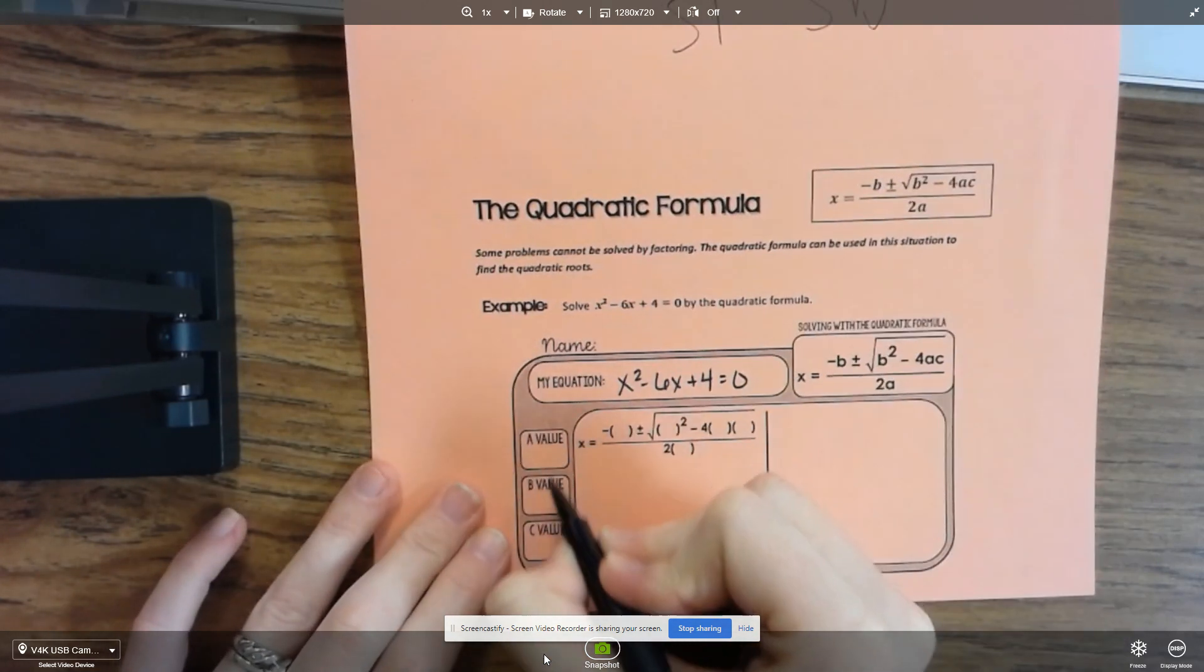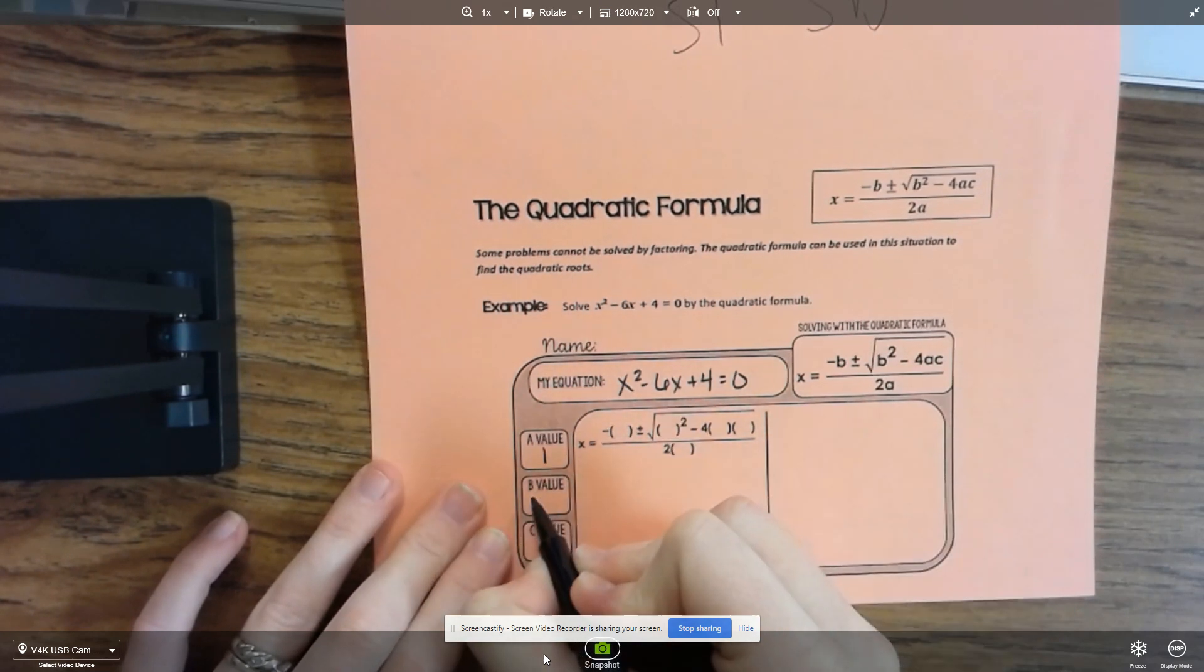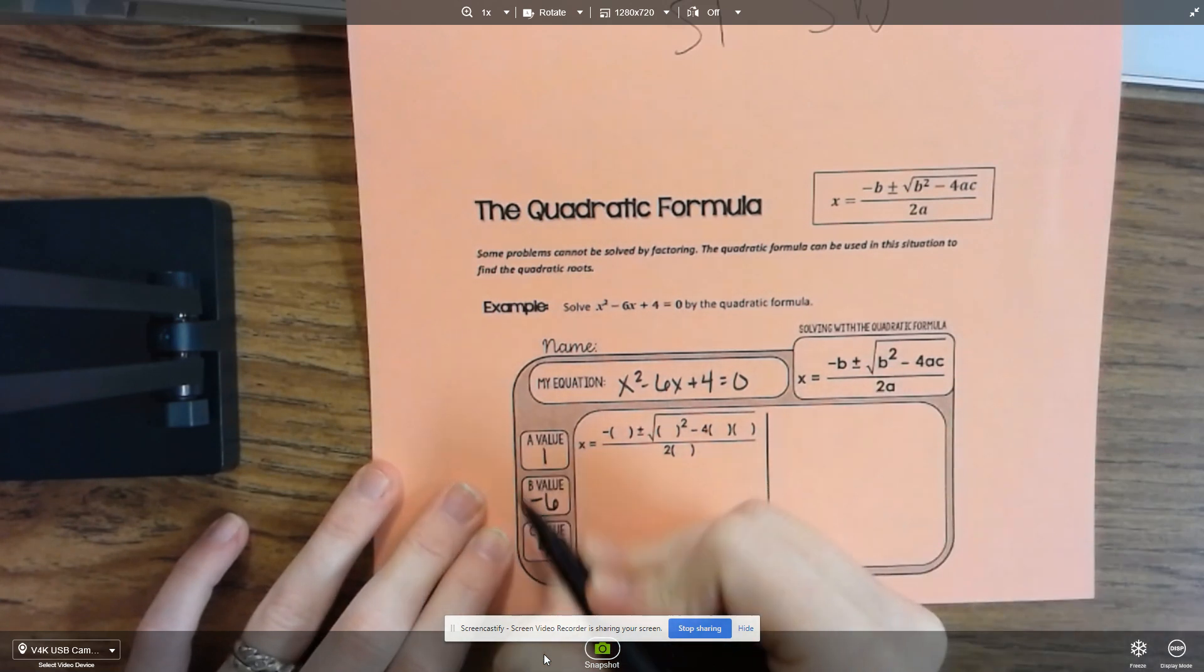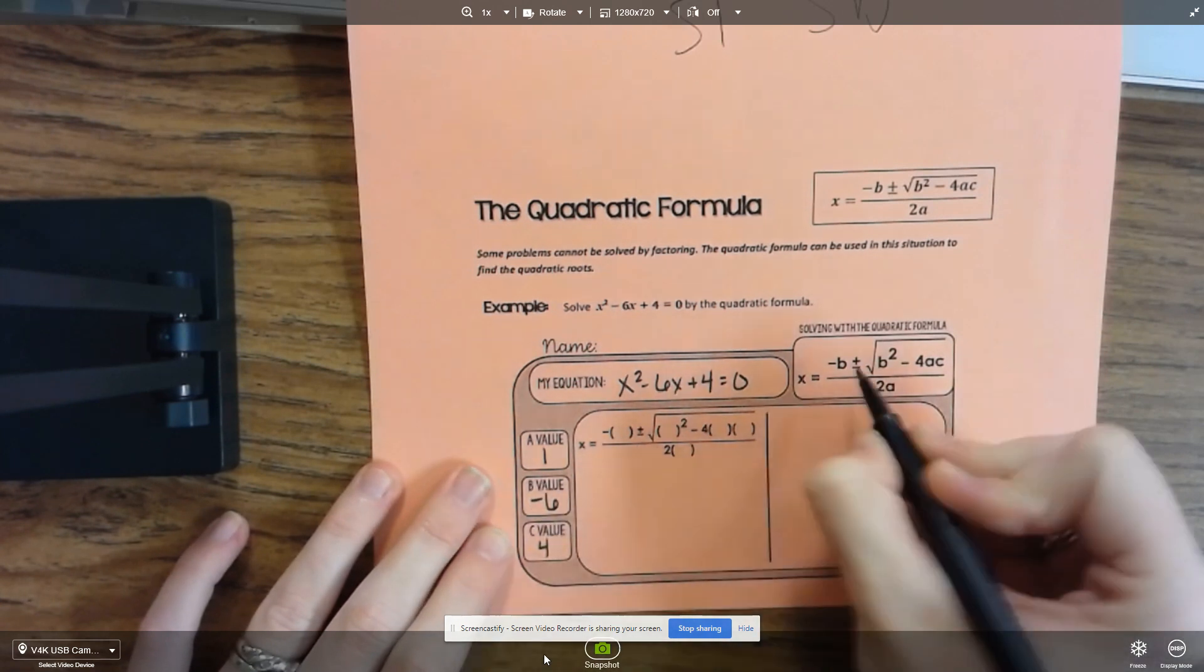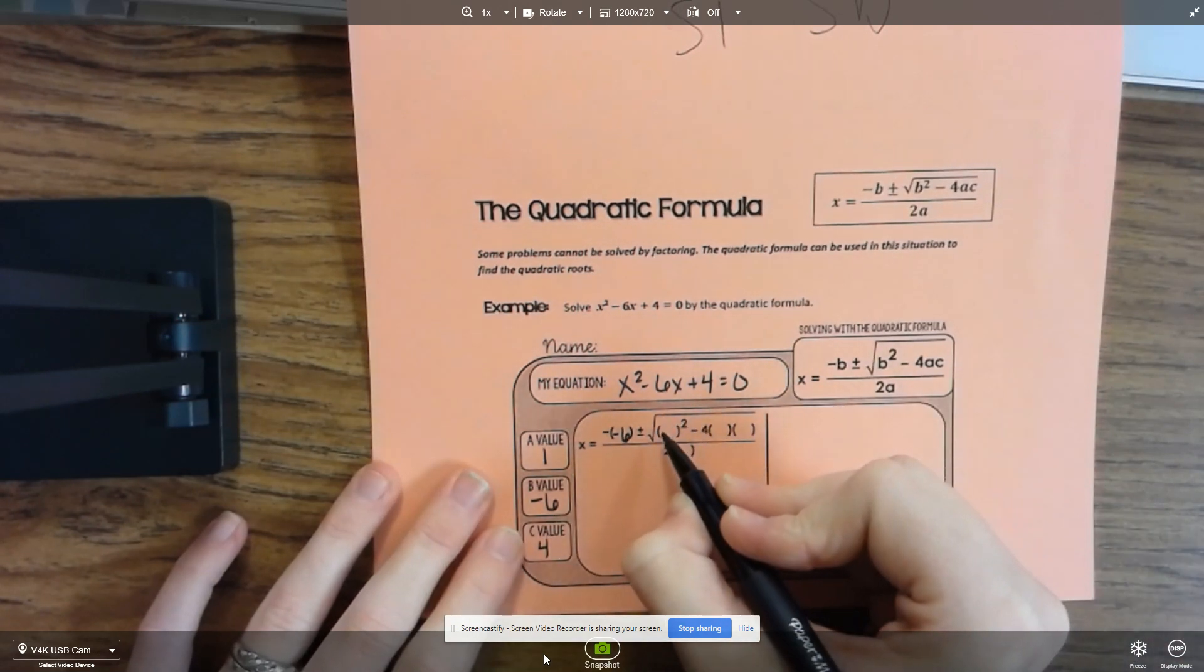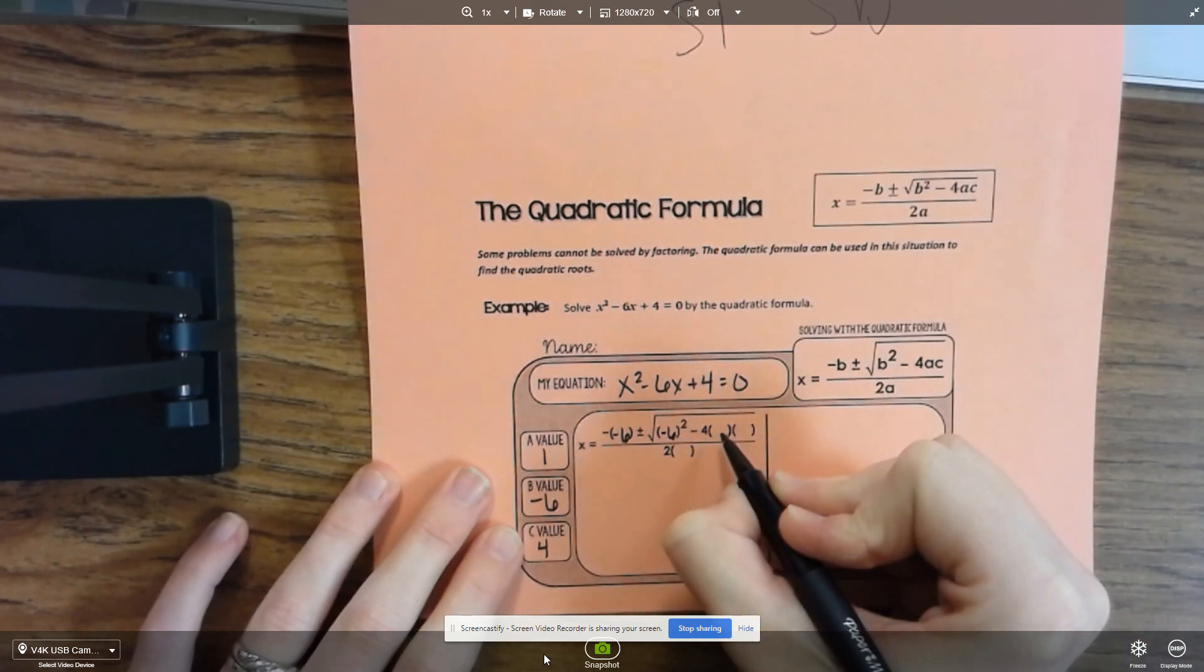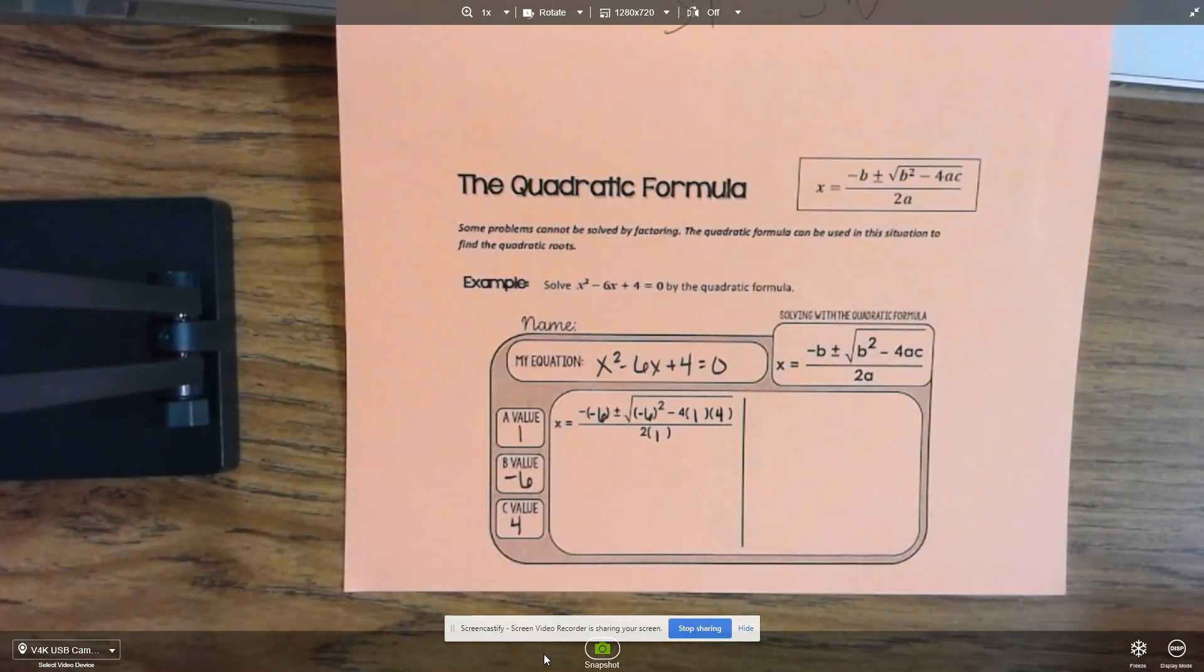You need to make sure that you know your a, b, and c values. So the a value is 1, the b would be negative 6, and the c would be positive 4. And then I plug all these pieces into this quadratic formula.